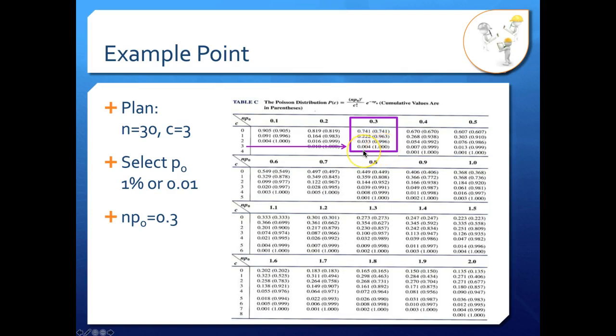Well, this first one is the probability of acceptance of exactly 3. So that particular value, exactly 3, I don't want that. I want 3 or fewer because it's okay if I accept a lot if I have 0 or 1 or 2 or 3 non-conforming units there. And to do that, I need the cumulative probability, which is in parentheses. So this value.